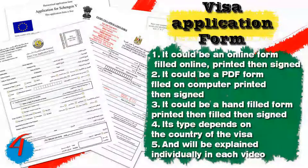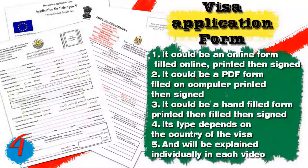Number four, you will need the visa application form. It could be an online form filled online, printed, then signed; or a PDF form filled on computer, printed, then signed; or a hand-filled form printed then filled then signed. The type depends on the country of the visa and will be explained individually in each video.